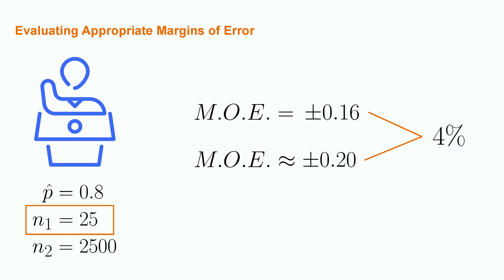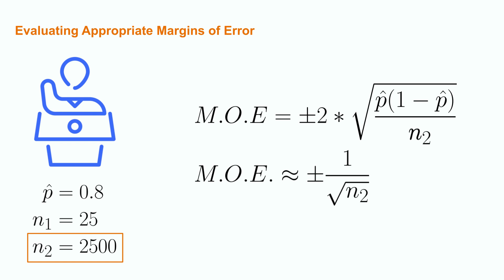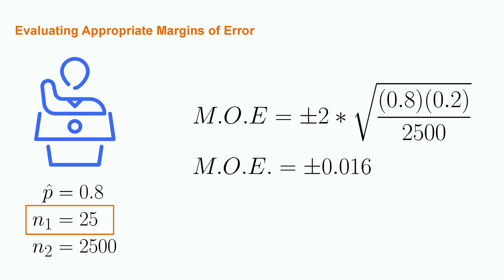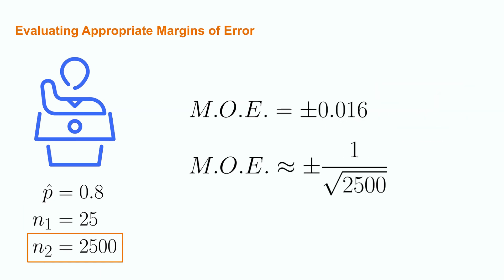Let's take a look at what happens when we have the larger sample. With the large sample size, the process is the same. The regular margin of error calculation will have us multiplying plus or minus 2 times the square root of 0.8 times 0.2 divided by our sample size of 2500. Plugging this into a calculator, this margin of error will be equal to plus or minus 0.016. With the approximation, we only need to take 1 over the square root of the sample size of 2500, yielding plus or minus 0.02. So these calculations differ only by 0.4% in each direction.